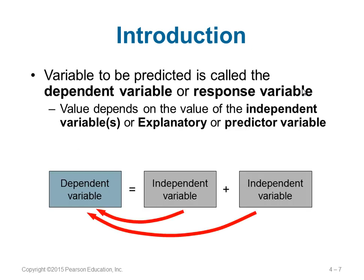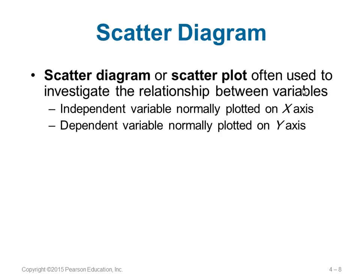What do you mean by independent variable and a dependent variable? The variable that you want to predict is called the dependent variable or response variable. It is on the left-hand side of the equation. The ones on the right-hand side are called independent variables, or explanatory variables, or predictor variables. These variables have an impact on the dependent variable — the dependent variable depends on the independent variables.